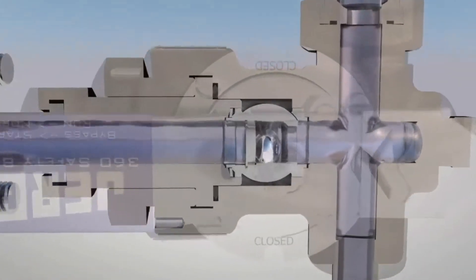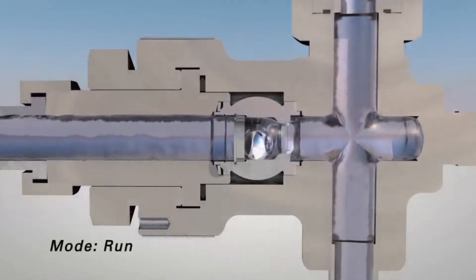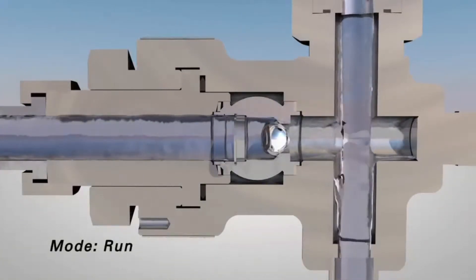If your level gauge is not maintained properly or a leak occurs, the ball check will engage and isolate the gauge from the vessel.